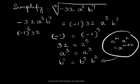Now we saw how to write negative 1, 32, a cubed, and b to the seventh in terms of factors having powers 5 or less. Now let us put them back into the radicand.